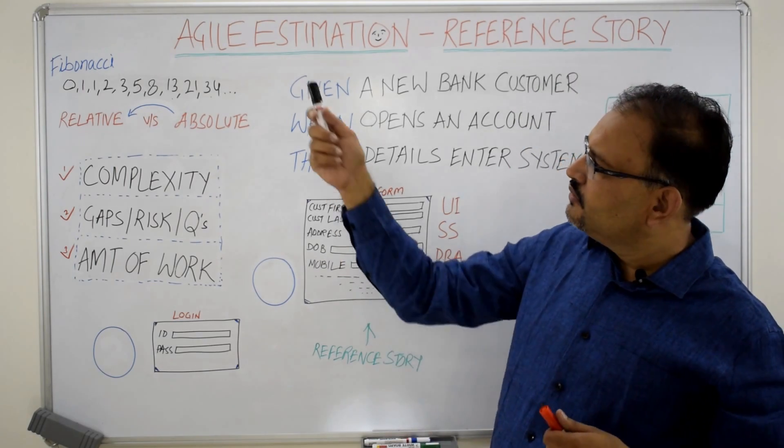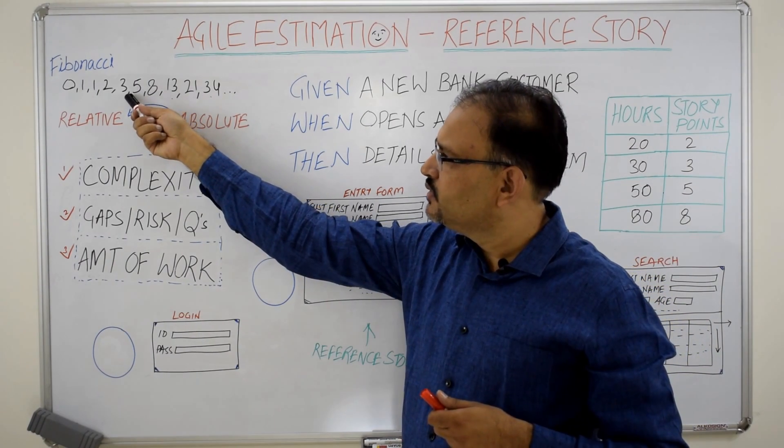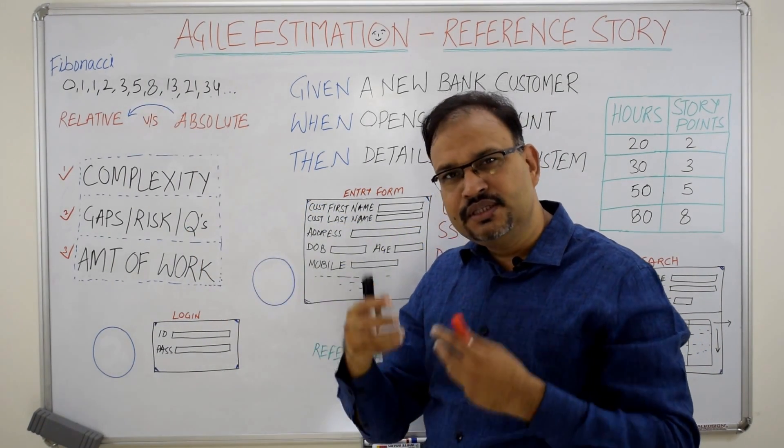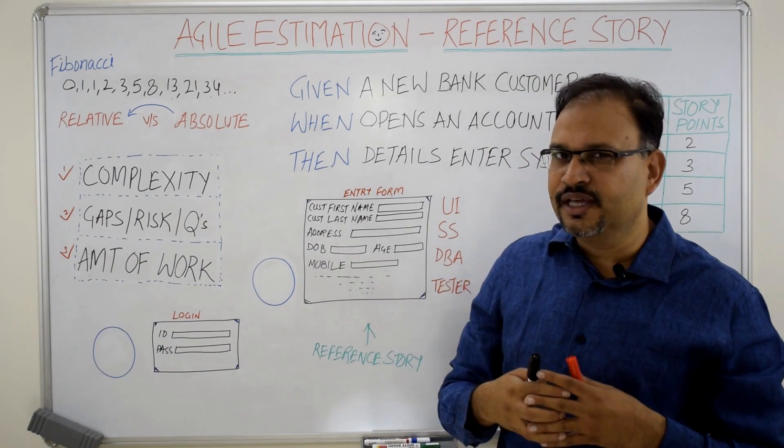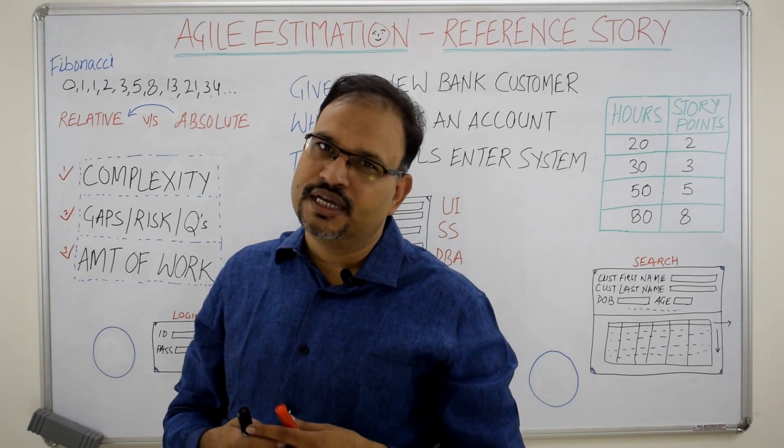As you can see in the Fibonacci series which are written down here, a number is sum of the previous two numbers. So that way these numbers are forming some relationship between them and this relationship is very important when it comes to estimating the stories.